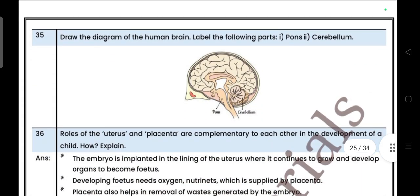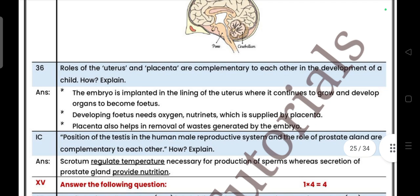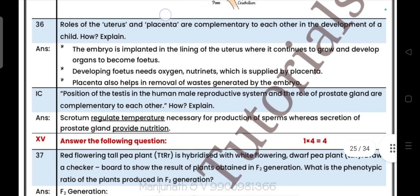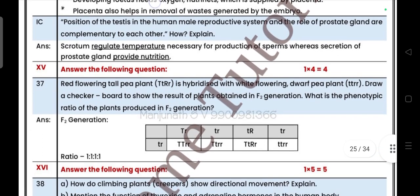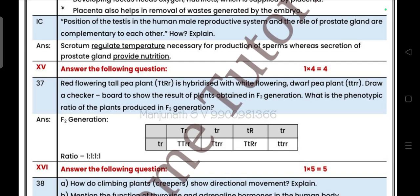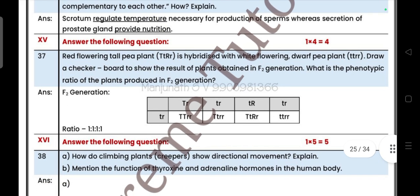Draw a diagram of a human brain, label the parts pons and cerebellum. Roles of the uterus and the placenta are complementary to each other in the development of a child, how? Explain. The position of the testis in the human male reproductive system and the role of prostate gland are complementary to each other, how? Explain. Next main, red flower of tall plant.